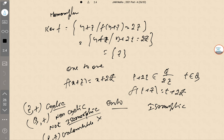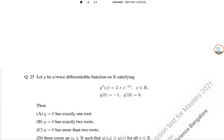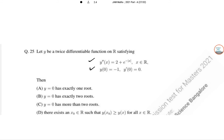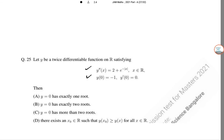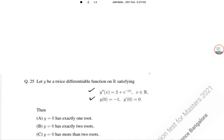Next question. Let Y be twice differentiable function on R. Y double dash is given. Y of zero is given. So, then Y equal to zero is exactly one root, two roots, more than two roots. So, this is the structure. Y double dash X is this. Y dash and Y double dash X is actually greater than zero for all values of X which is real. So, Y dash X is strictly increasing for all values of X belongs to R. So, Y dash zero equal to zero.